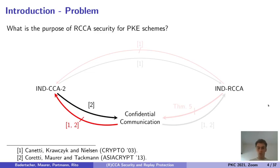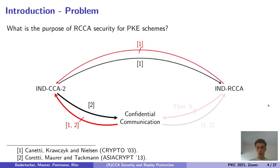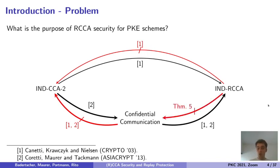The same happens with RCCA security. RCCA security is the relaxation of CCA2 security — relaxation in the sense that it is implied by CCA2 security, but it does not imply CCA2 security. RCCA security is necessary to achieve confidential communication. Actually, it is also sufficient to achieve confidential communication, but only if the message space size is large. For small message space sizes, IND-RCCA does not capture non-malleability, which is a requirement for confidential communication. This means that, in general, IND-RCCA does not capture confidential communication.